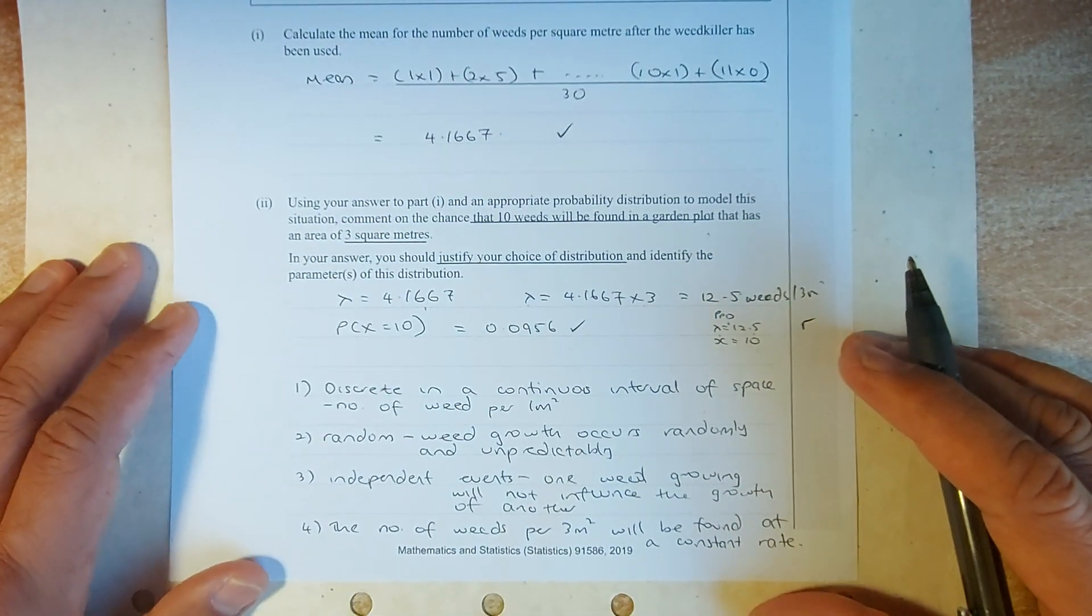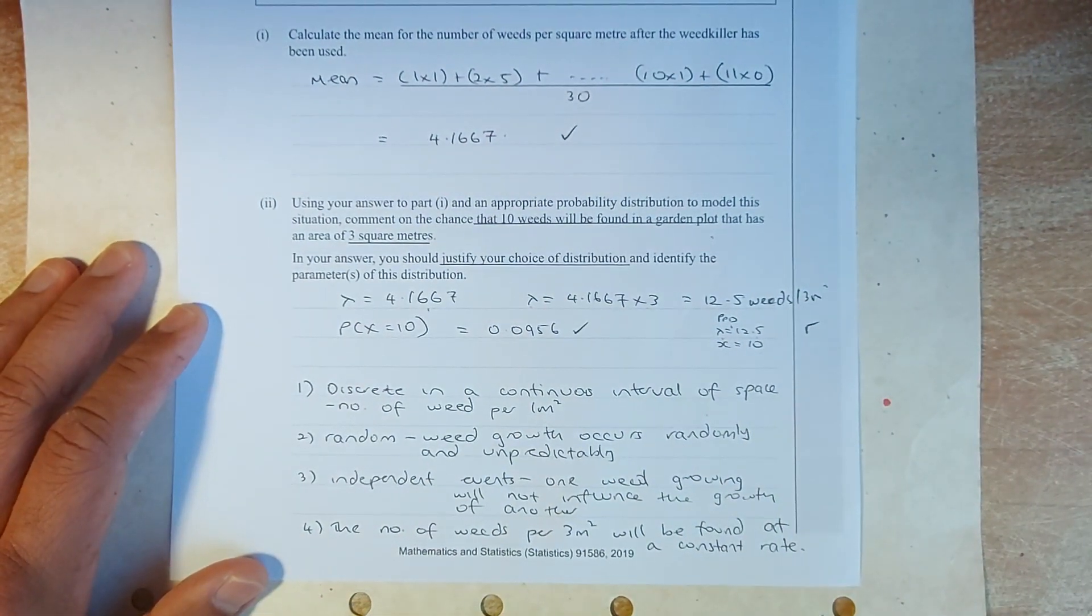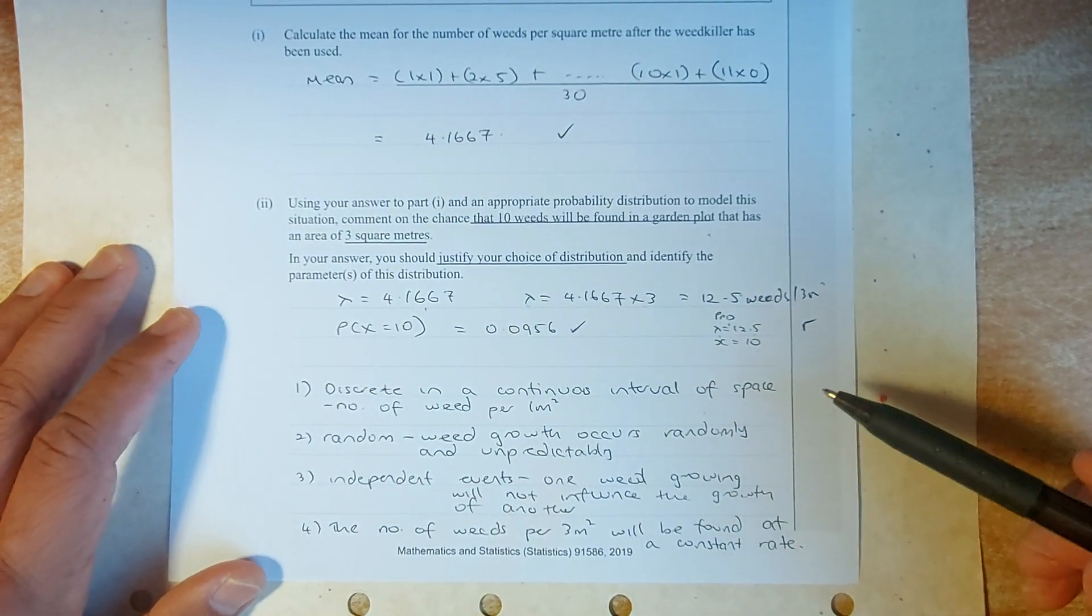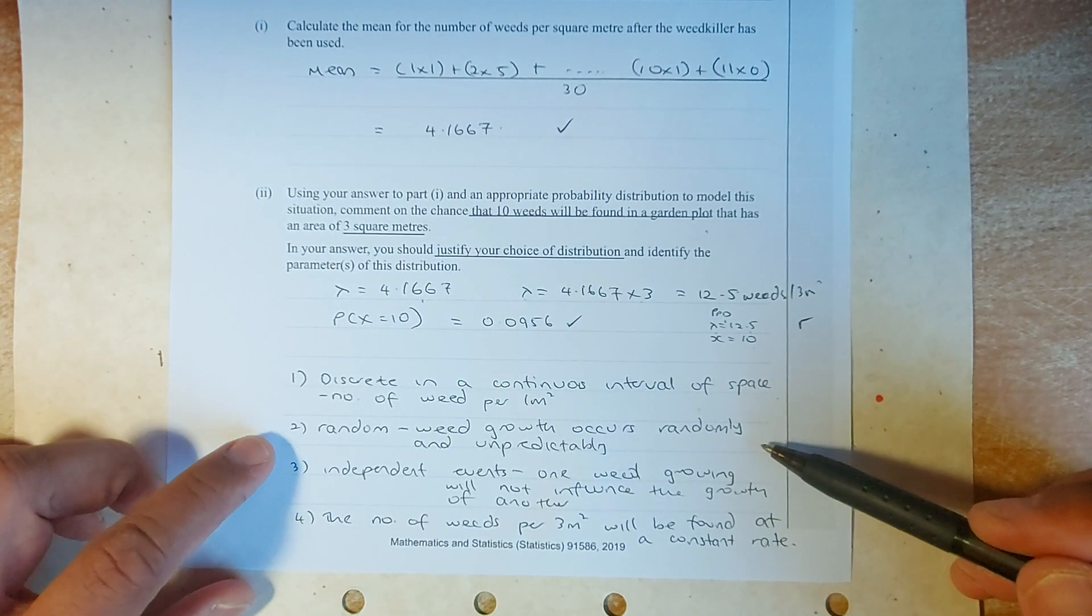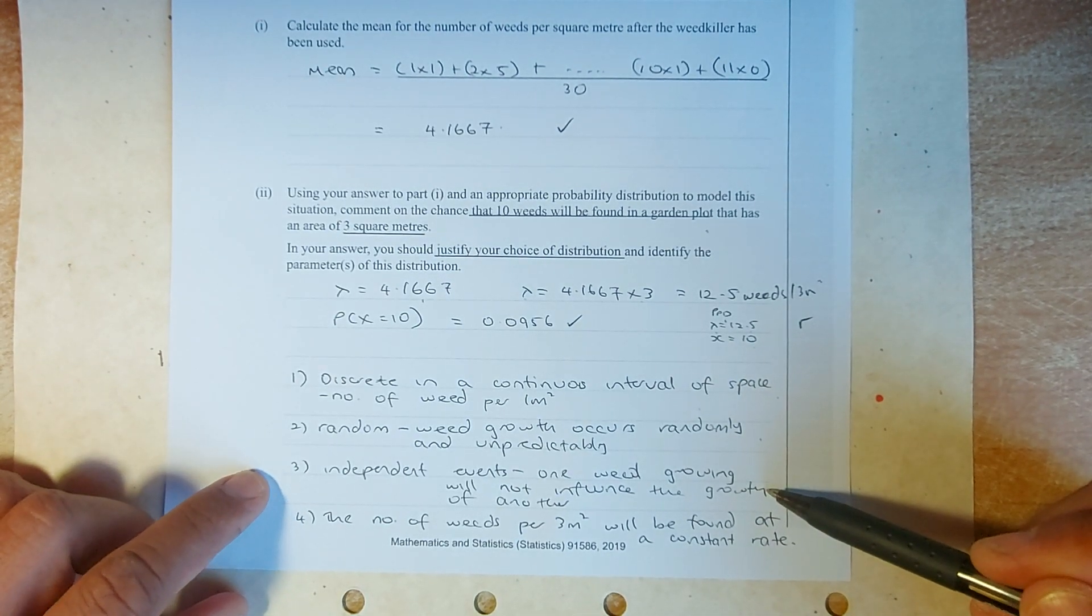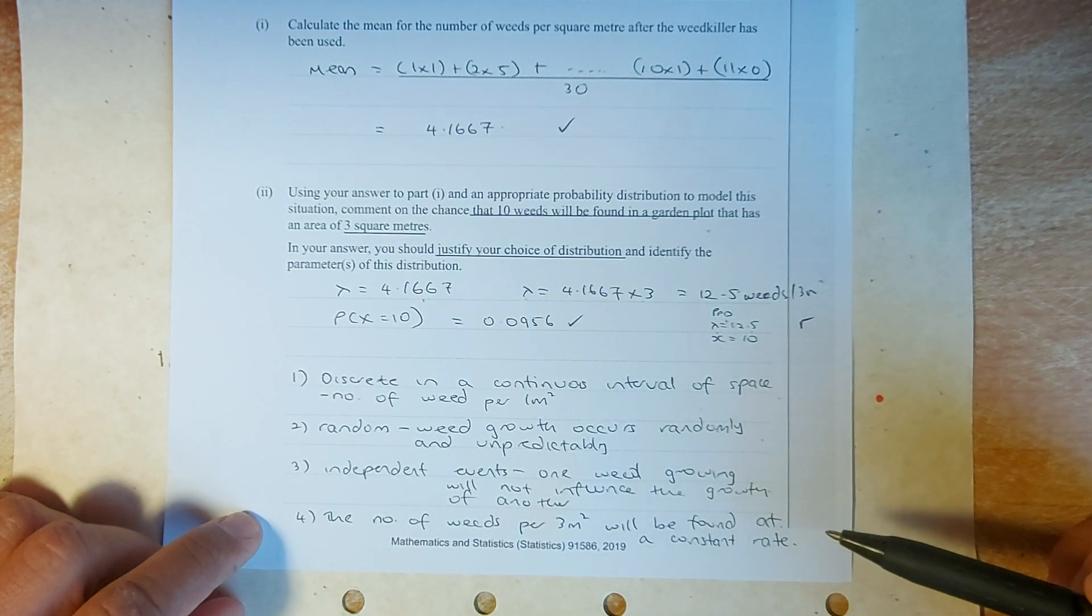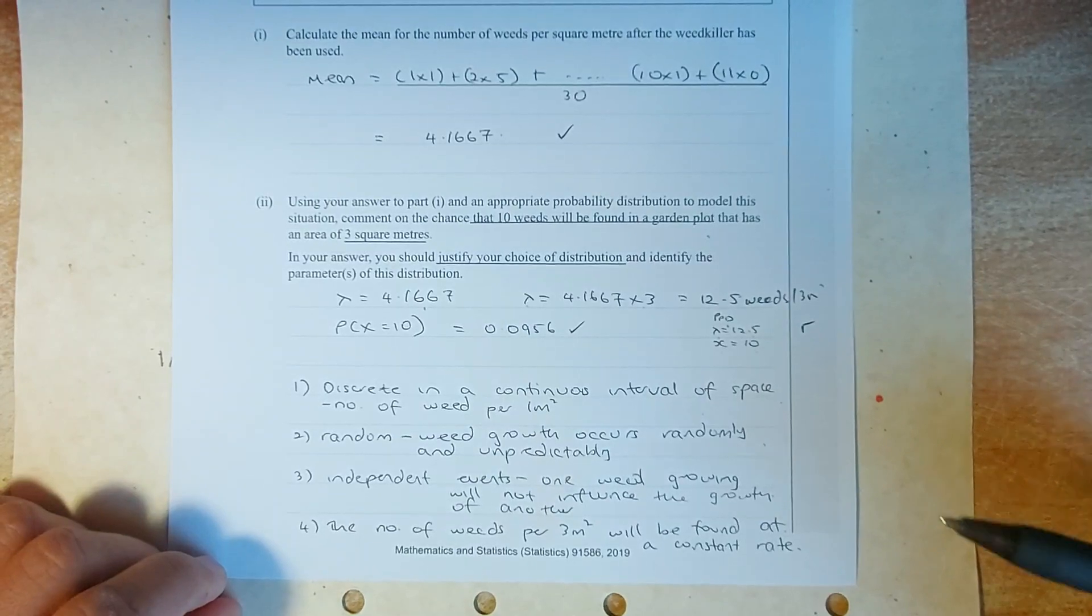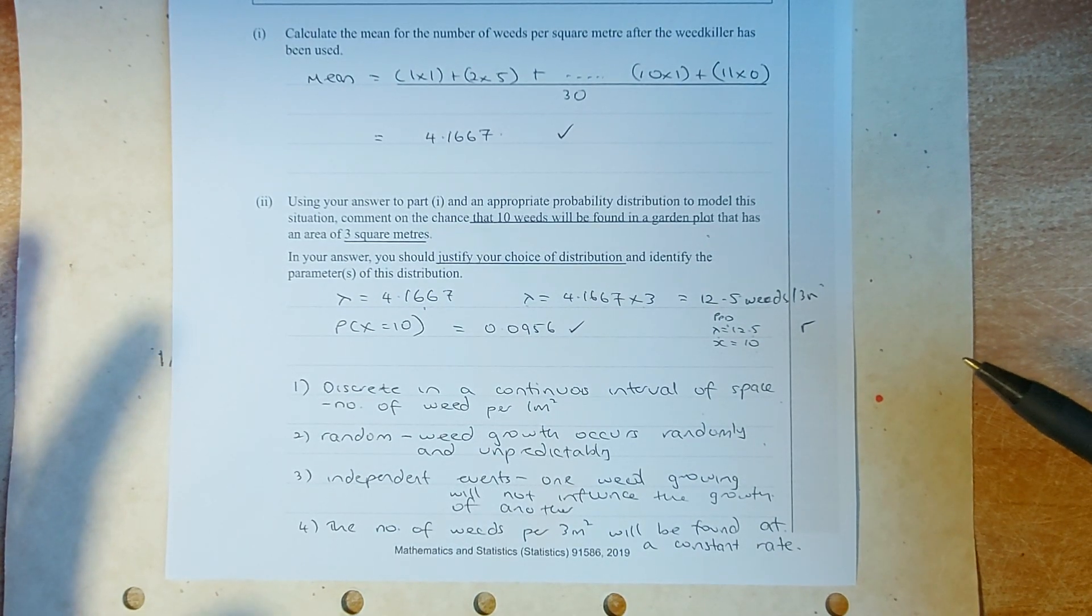And of course, the last one you should remember by now, how to justify the distribution in the exam is always asking you the justification of both Poisson, binomial or normal. So, this is just, spit it out, memorized by heart. So, for a Poisson, it's discrete, in a continuous interval of space, number of weed per 1 meter squared. It is random. Weed growth occurs randomly and unpredictably. They are independent events. One weed growing will not influence the growth of another, and number of weed per 3 meter squared will not be found at a constant rate. So, keep practicing, and if you practice hard, to get an excellence in this paper is not so difficult. In this paper, there's a mixture of calculation as well as some justification. So, good luck in your NCEA this year, and see you soon.